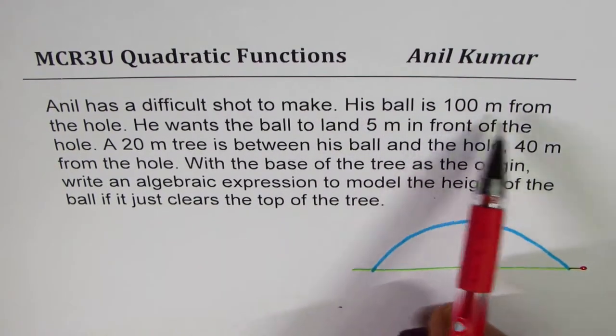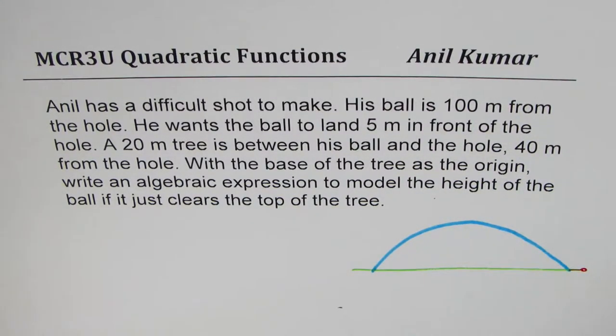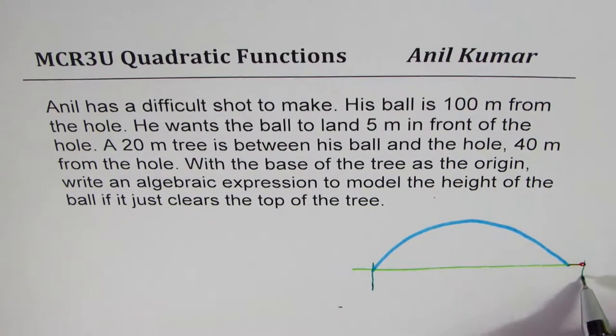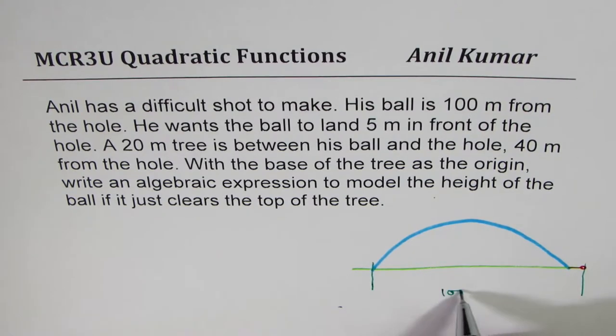So it says Anil has a difficult shot to play. His ball is 100 meters from the hole. So that really means that the distance from here to this point is 100 meters.